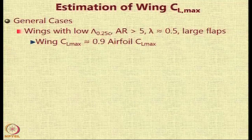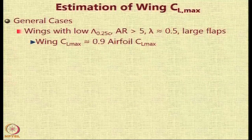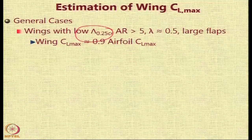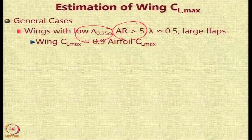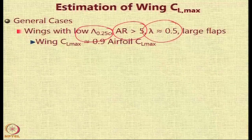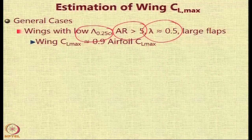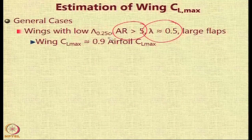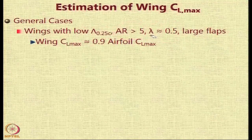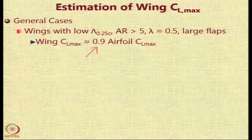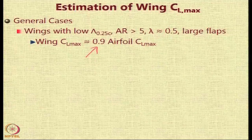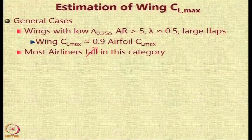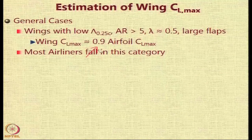If you look at 3-dimensional effects, generally what happens is that if you have low quarter chord sweep, if you have reasonably high aspect ratio and if you have a taper of nearly 0.5 and large flaps, then the loss because of the 3D effect is only around 10 percent. So therefore, the wing CL max would be approximately 0.9 of the CL max of the aircraft, and most airliners will fall in this category.